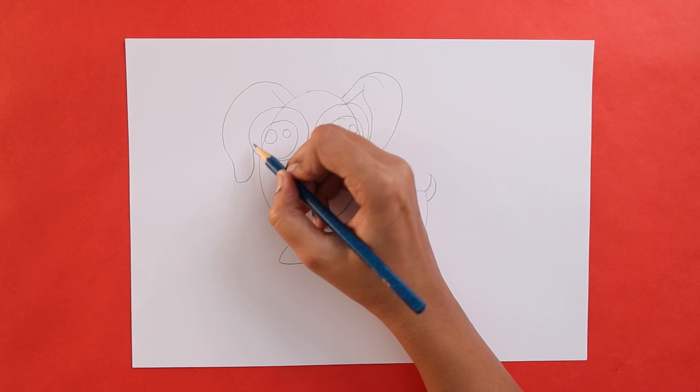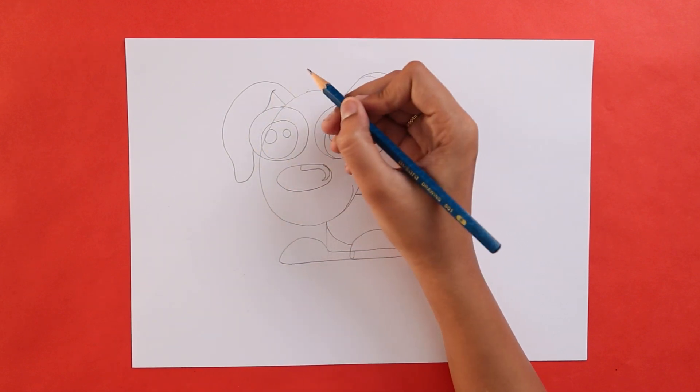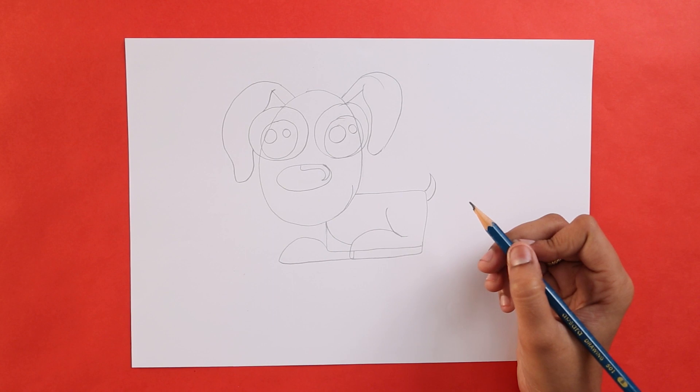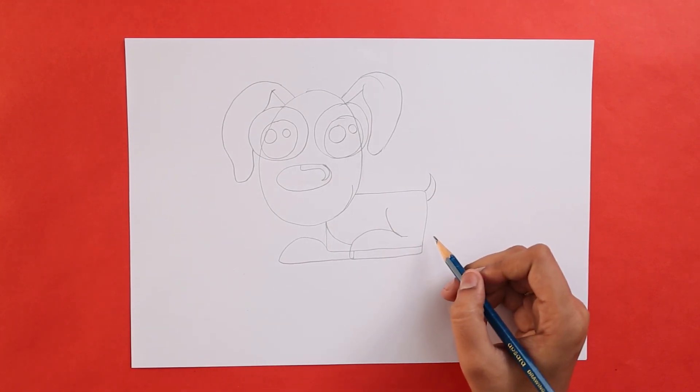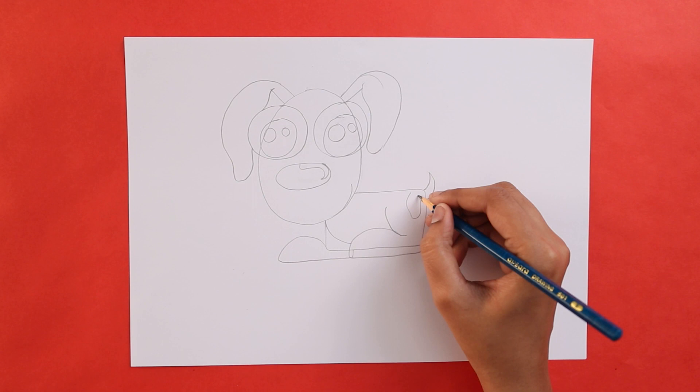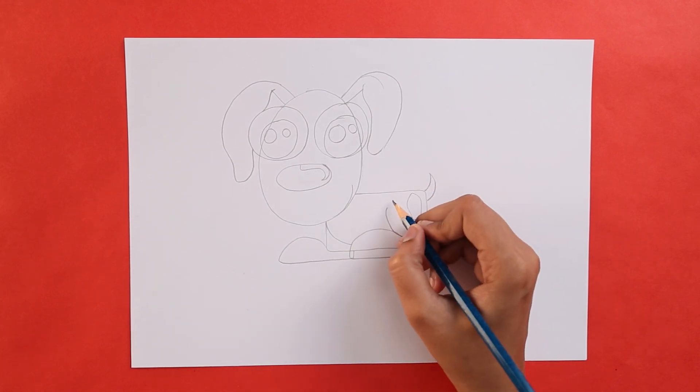Once you're done with the ears, you can also draw little patches on your dog. Now this is completely optional. You can also draw a little dog tag on him.